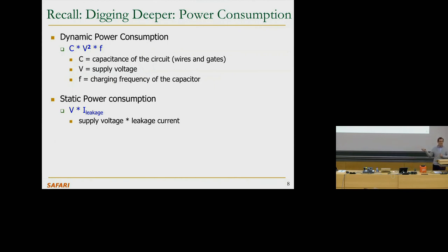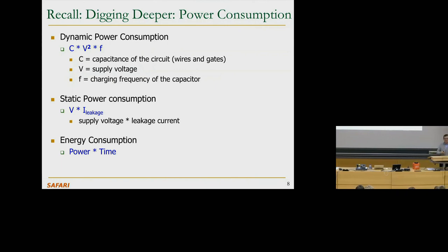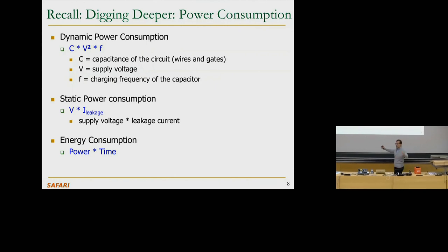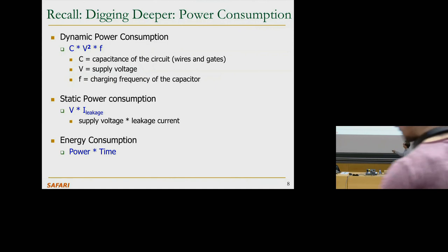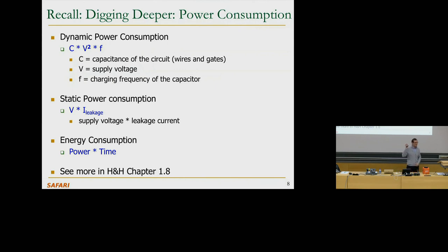If you want to compute energy, now that you know power — energy is power times time. Power is instantaneous; you integrate power over the time you're consuming it under the power curve, and you get energy. You multiply both equations by time and get energy consumption. Energy determines how much you're drawing out of a battery, and your battery life is very much affected by energy. See more in Harris and Harris chapter 1.8.